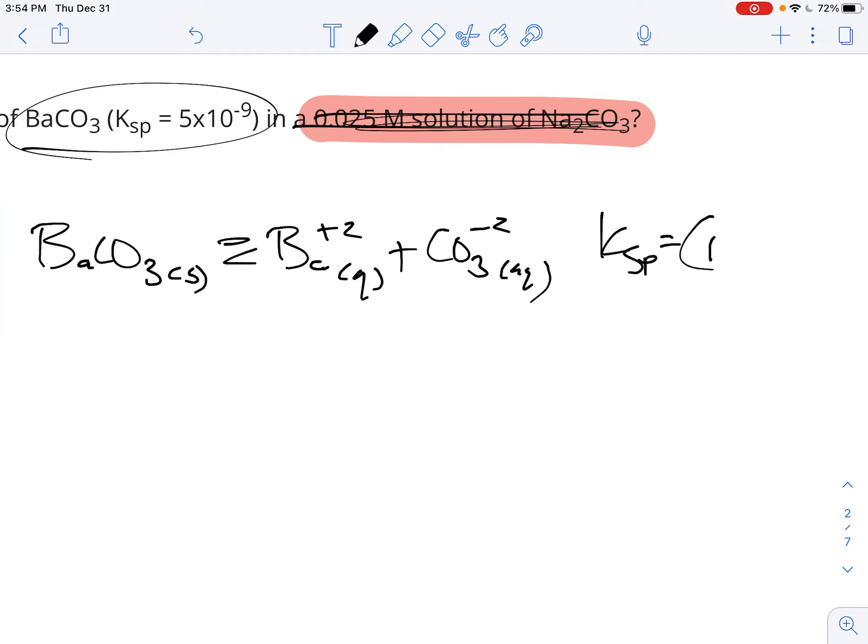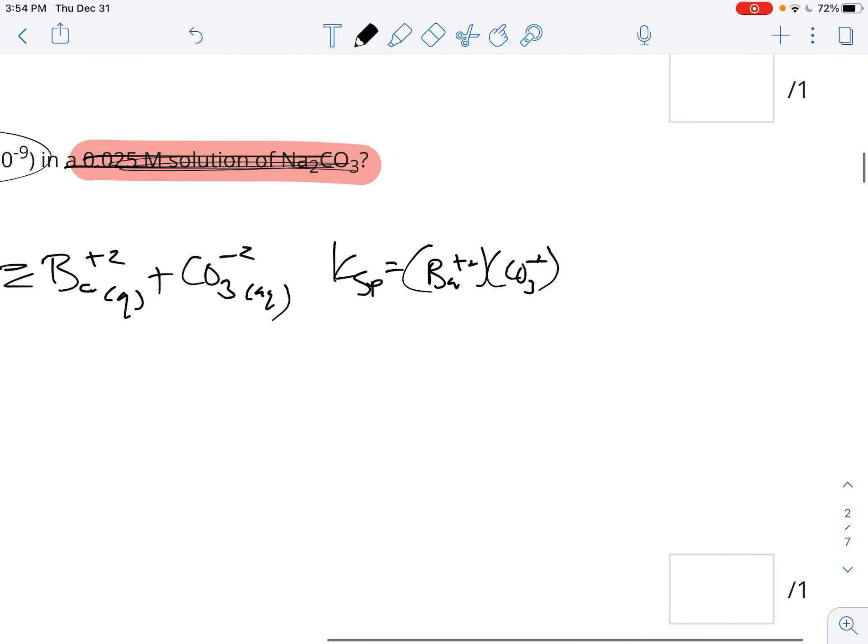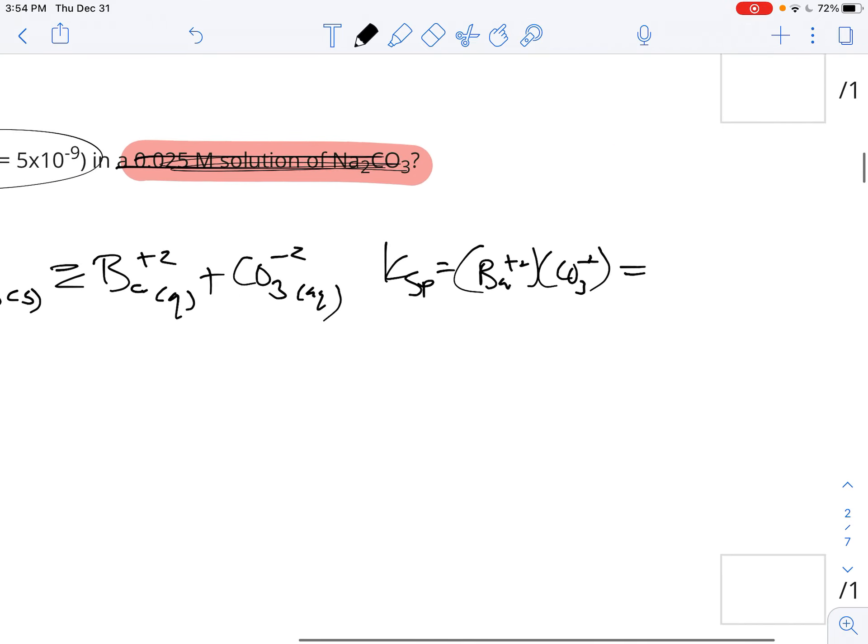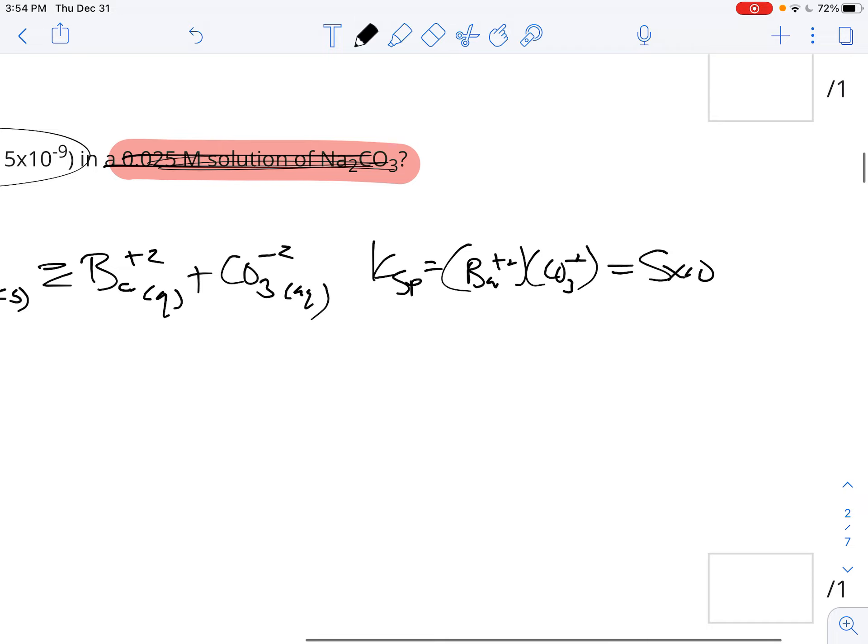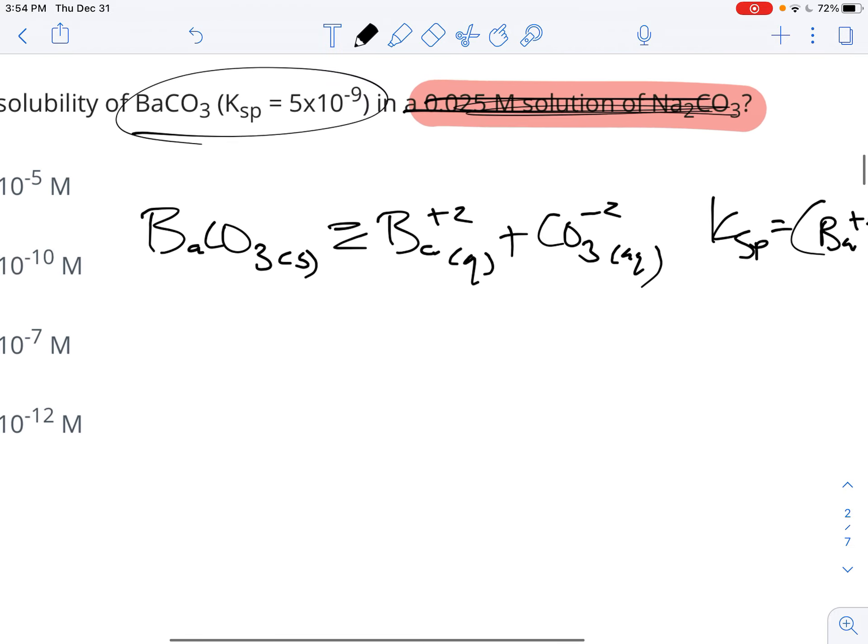And again, KSP then is equal to the barium times the carbonate. And we've got a number for that - five times 10 to the negative ninth.